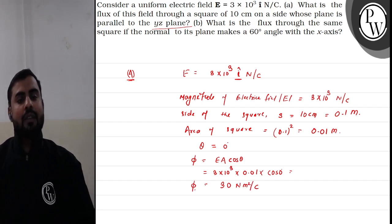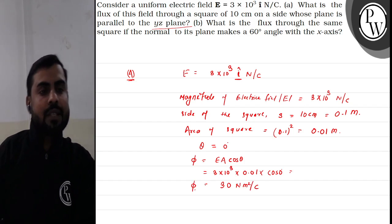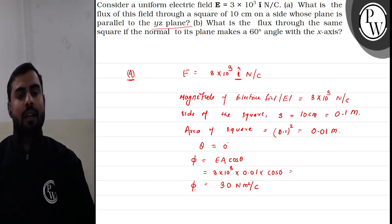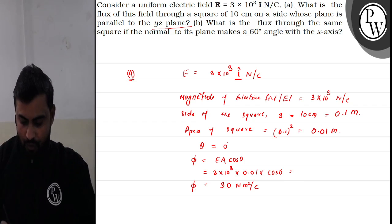So the answer to the first part of the question is 30 Newton meter square per coulomb. Let us now move to the second part of the question.